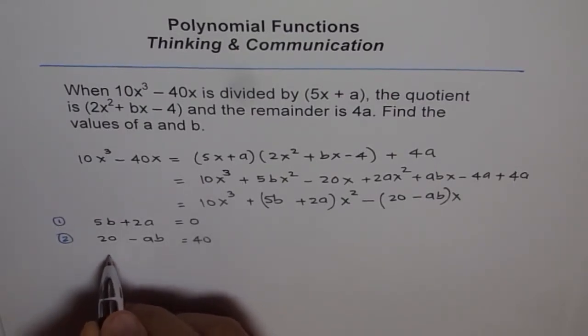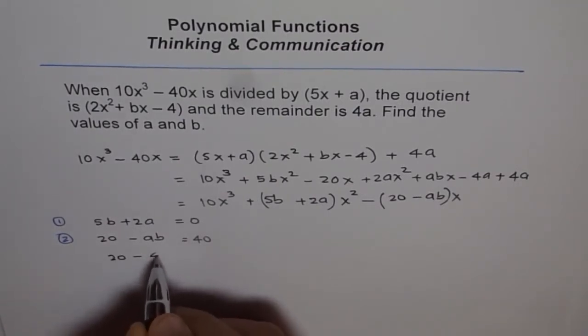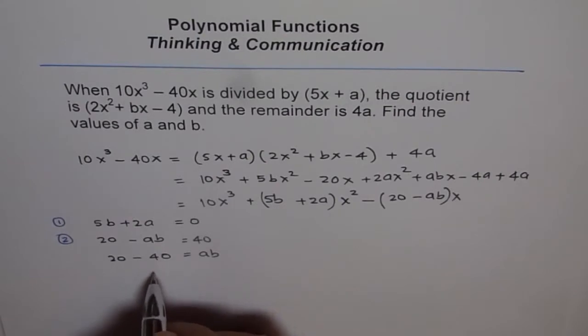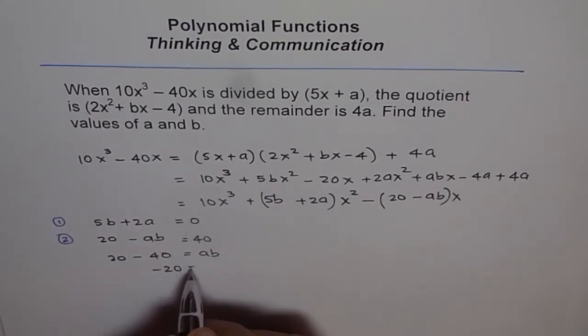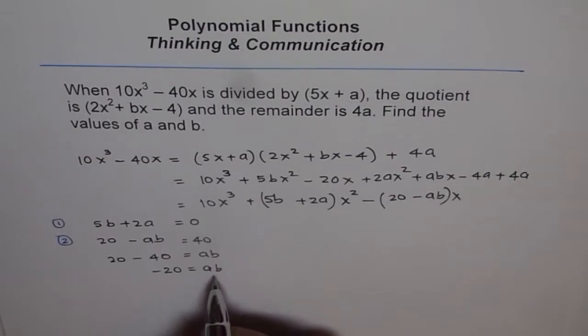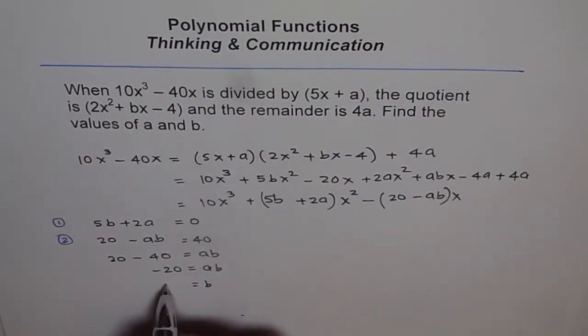So minus 20 equals to ab. We can write in terms of a or in terms of b. From here, we can say, what is b in terms of a? So b in terms of a is minus 20 over a. So this is what we get, the relation between a and b from equation 2.